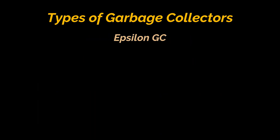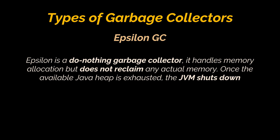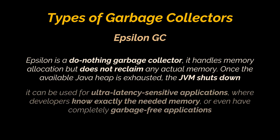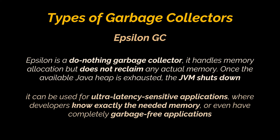The Epsilon GC is a do-nothing garbage collector released as part of JDK 11. It handles memory allocations but does not implement any actual memory reclamation mechanism. Once the available Java heap is exhausted, the JVM shuts down. It can be used for ultra-latency-sensitive applications where developers know the application memory footprint exactly, or for completely garbage-free applications. Use of the Epsilon GC in any other scenario is otherwise discouraged.